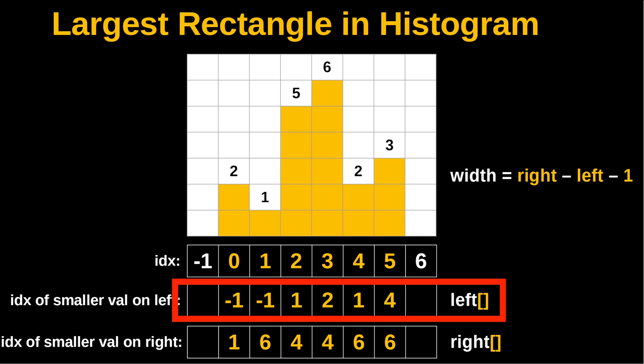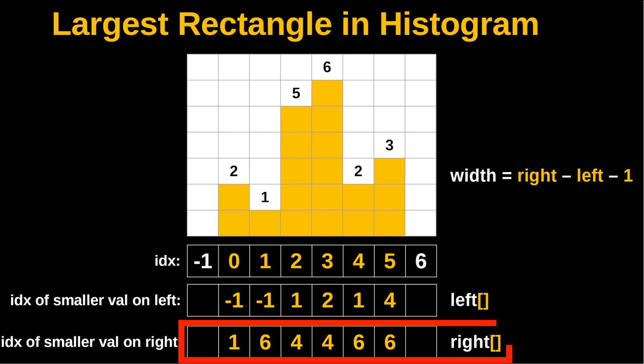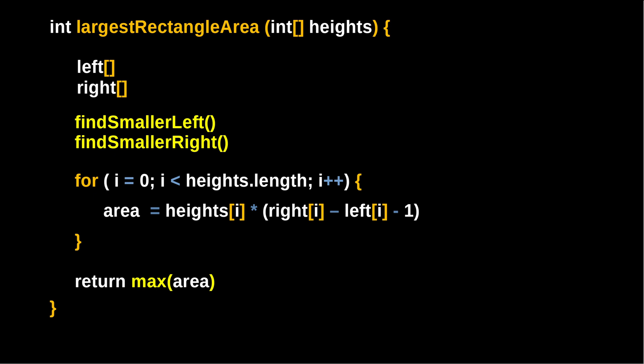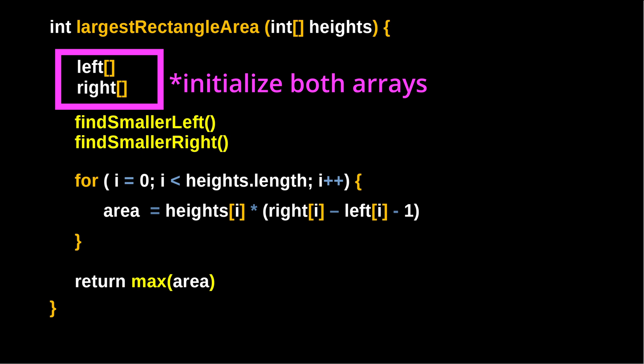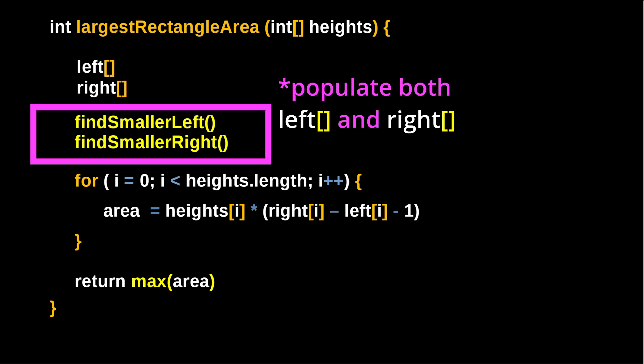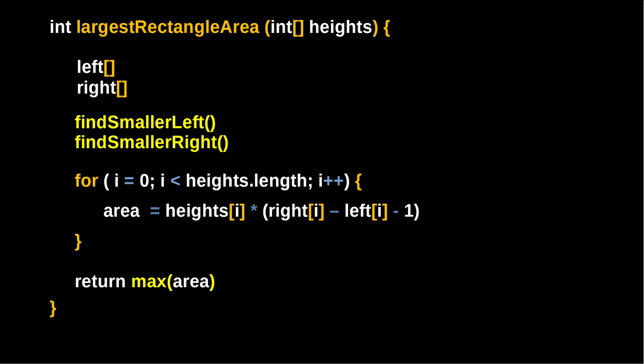The left boundary values will be held in an array called left, and the right boundary values in an array called right. The pseudo code for this function is: initialize both the left and right arrays, write two functions to establish the index of the smaller value on the left and on the right, then iterate the array computing area as height times width, and finally return the maximum area found.